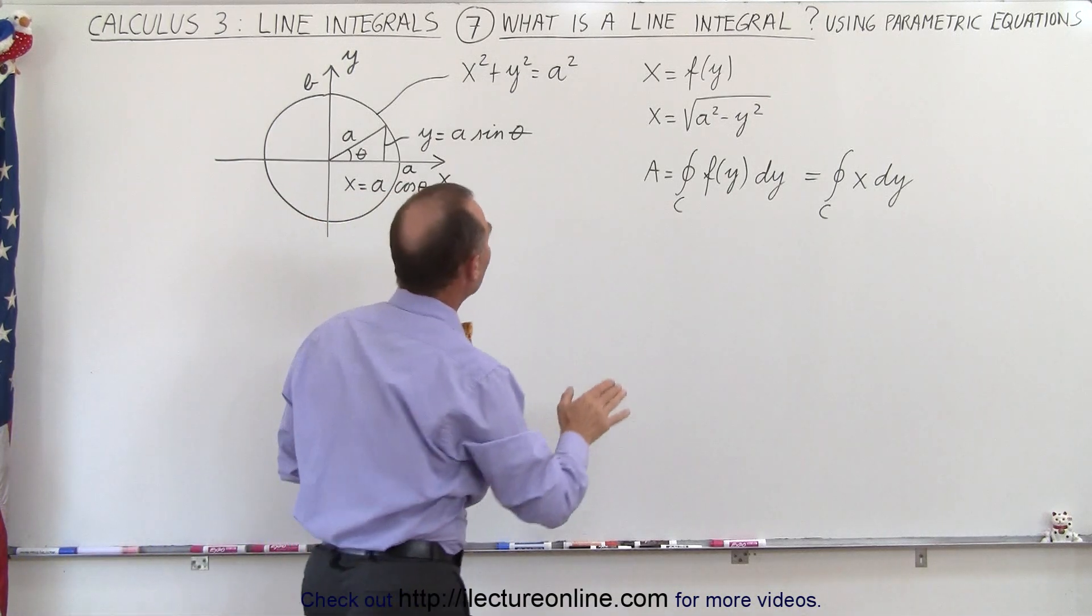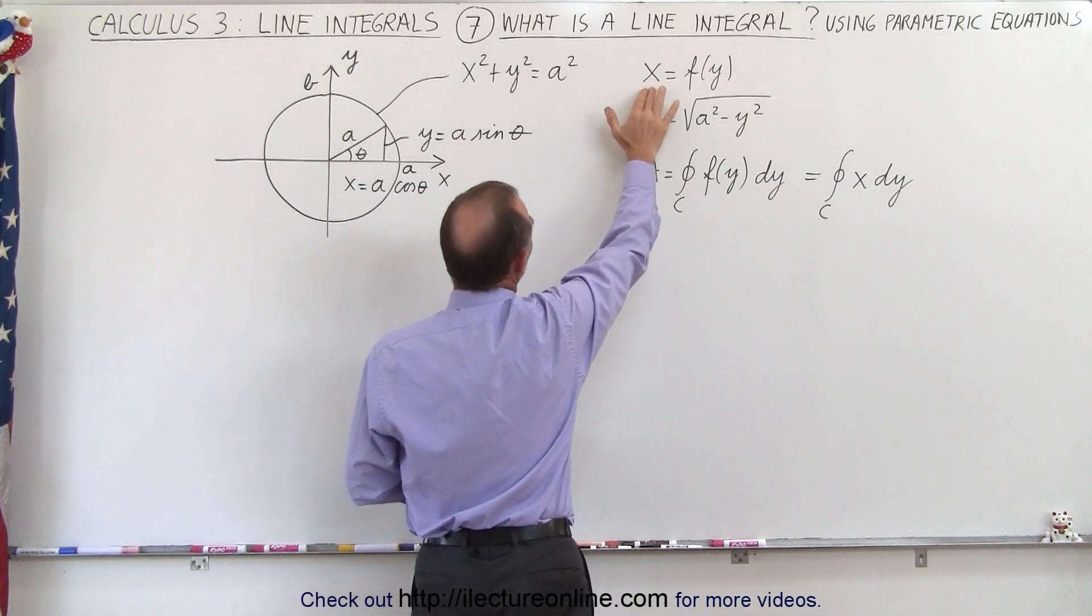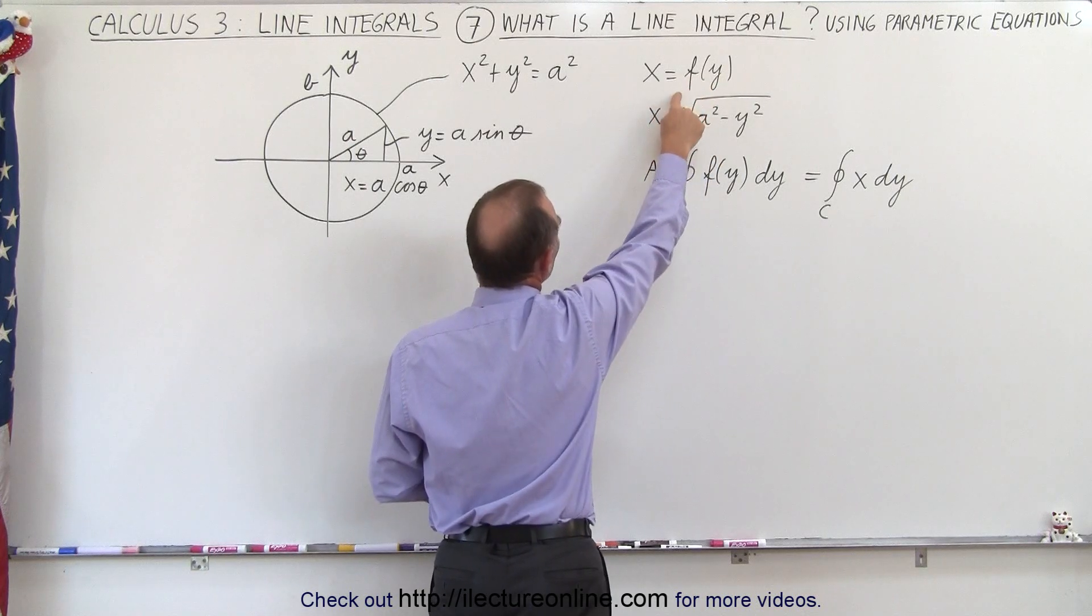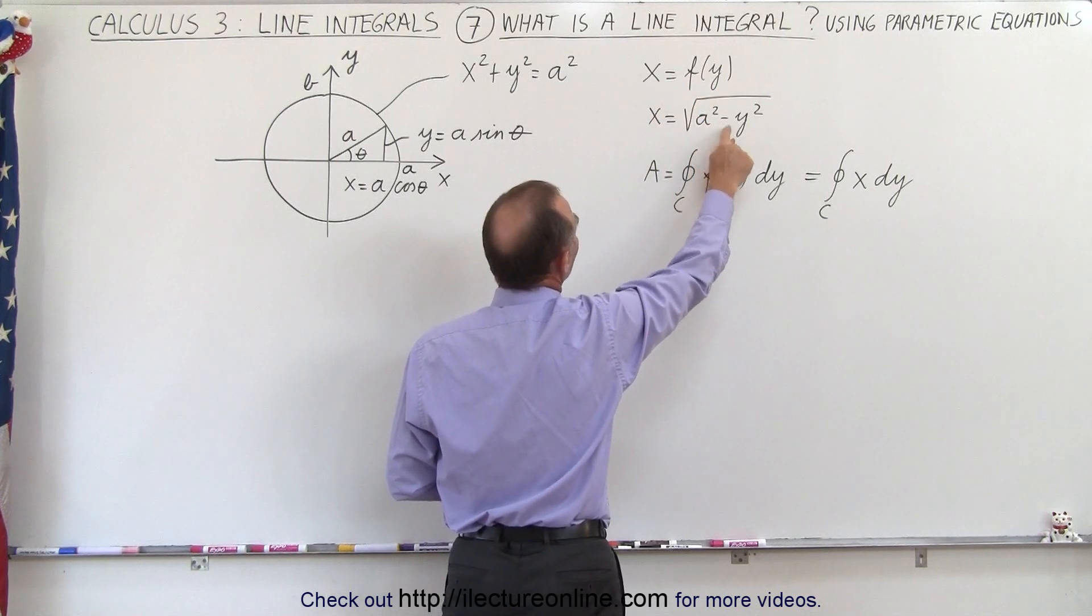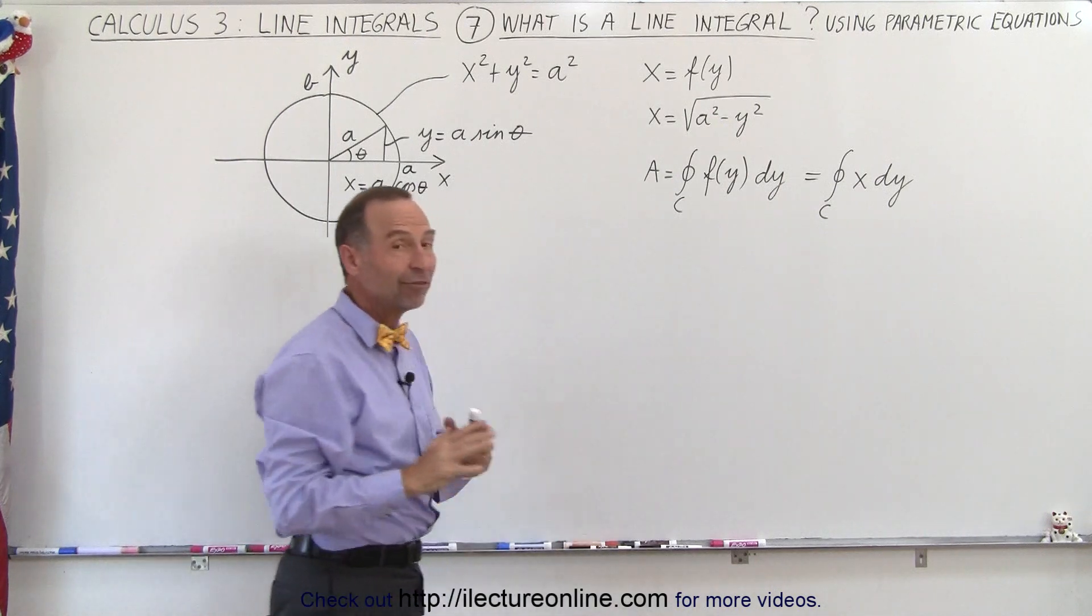But starting out, we're going to say that we're going to write x as the function of y, and of course if we do that, the function of y will be the square root of a squared minus y squared.